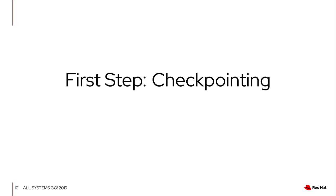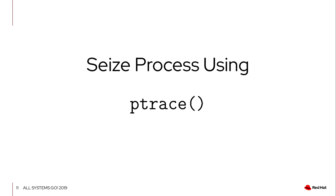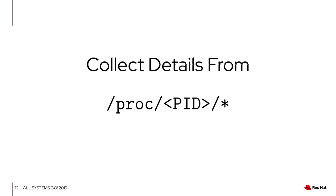Before going to the container engine integration, I want to give some details about how CRIU works. The first step is checkpointing the process or container. CRIU uses ptrace to pause the container — to stop it — and then it starts collecting information about the process and writes it to disk. One of the main interfaces CRIU uses is /proc/PID to collect that information, which is also one of the reasons it's called checkpoint/restore in user space.